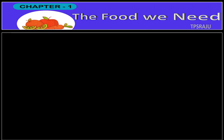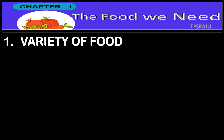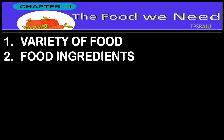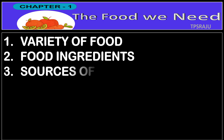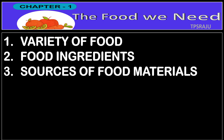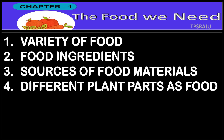In this chapter there are seven topics. First one is variety of food. Second one is food ingredients. Third one is sources of food materials. Fourth one is different plant parts as food.